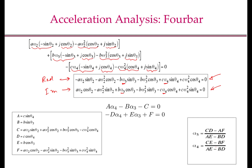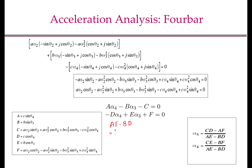Note that the divide-by-zero problem from the velocity kinematics case, when theta 3 equals theta 4, is still present here. The denominator (ae − bd) equals bc · sin(theta_4 − theta_3), so when theta 4 equals theta 3, you cannot compute the angular accelerations alpha 3 and alpha 4.